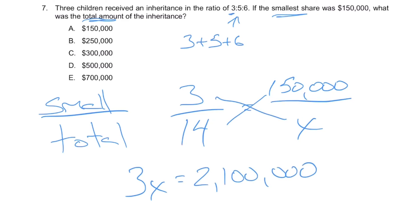And then finally to solve, divide by three, divide by three. X is going to be equal to seven hundred thousand dollars—the total amount of this inheritance. It's going to be E, seven hundred thousand. Brush up on your skills with these multiple ratios here. Understand how to use them because it's very common on this test. You know, it's easy to give you a one to two ratio or something like that, but now they're just going to up the level a little bit.